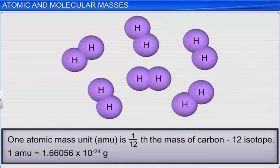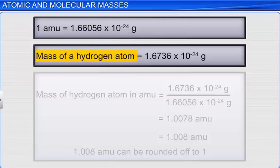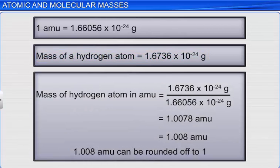Let's determine the atomic mass unit of hydrogen based on this formula. We know that one atomic mass unit is equal to 1.66056 multiplied by 10 raised to minus 24 grams. The mass of a hydrogen atom was determined using a spectrometer and was found to be 1.6736 multiplied by 10 raised to minus 24 grams. Therefore, in terms of atomic mass unit, the mass of an atom of hydrogen is said to be 1.008 AMU.